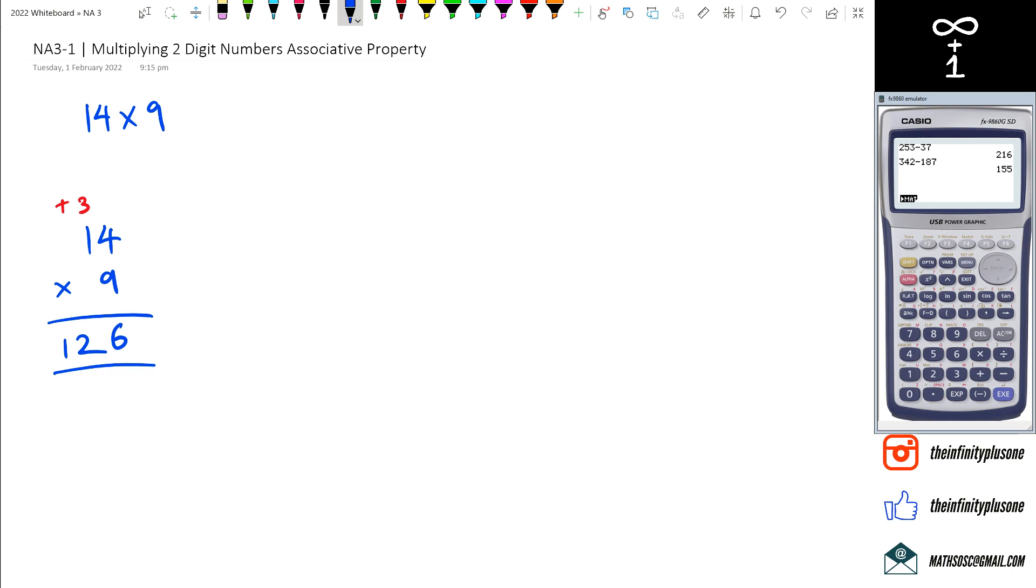Now just to recap the distributive property, what you would have done is this. With distributive, 14 times 9 could be written as 10 times 9 plus 4 times 9. So you've got 90 plus 36 which equals 126.